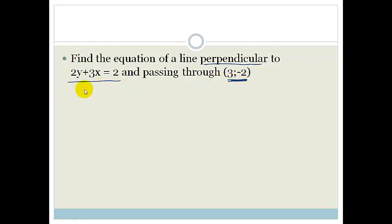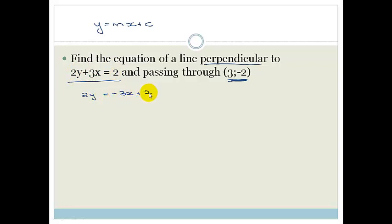So the first thing is always, grade 11's — we get this into the standard form. y equals mx plus c is the standard form. Grade 11's, you need to know that in your sleep. So let's get this into standard form. We've got 2y is equal to minus 3x plus 2. We're going to divide both sides by 2 to get rid of this coefficient. So y is equal to minus 3 over 2 times x plus 1.